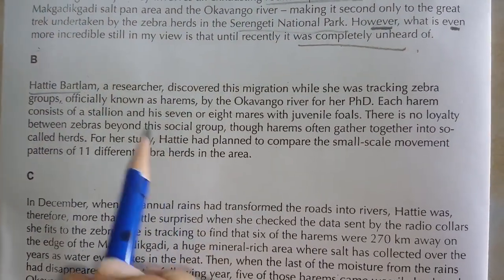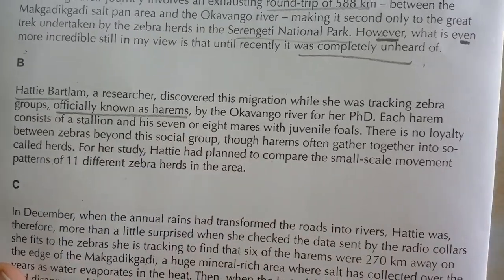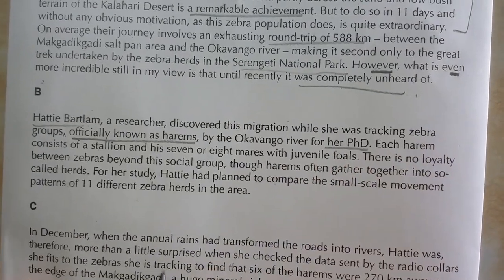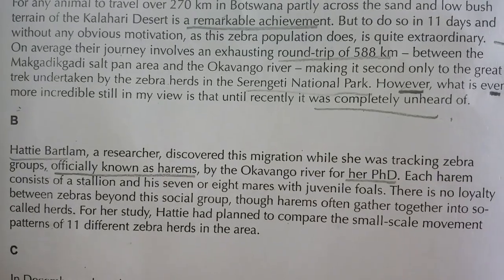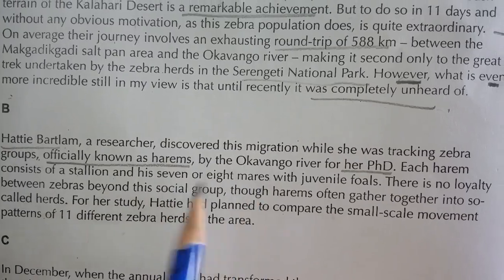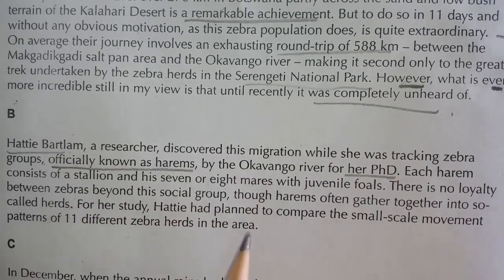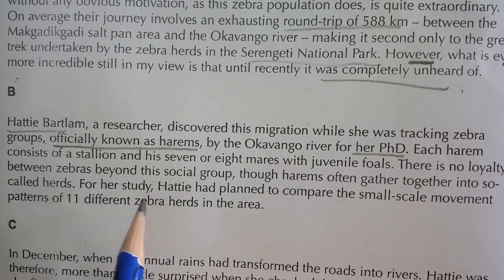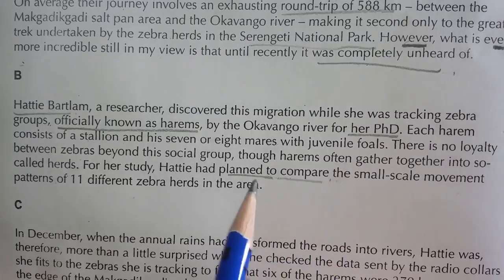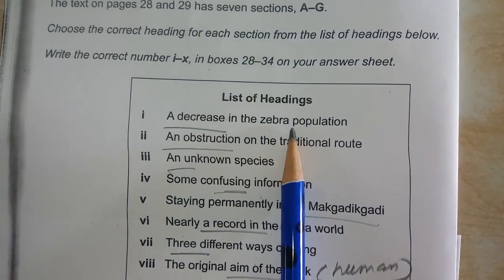Now let's go to paragraph B. There is a name of one person — underline the name. I think Bartlam, a researcher, discovered this migration. She discovered it while she was studying zebra groups, officially known as harems. That was the aim — she was studying for her PhD, so that was part of her research. She studied each area and gave some definition of what kinds of animals live there. 'There is no loyalty between zebras beyond this social group.' She had planned to compare the small-scale movement patterns of 11 different zebras.